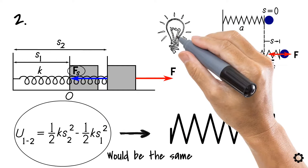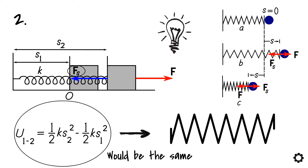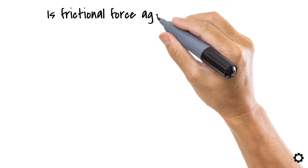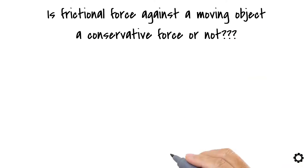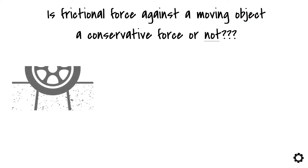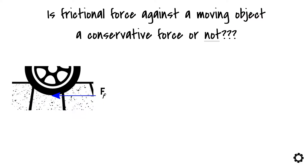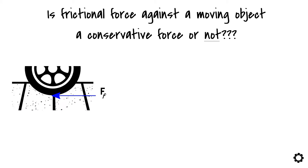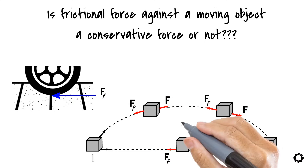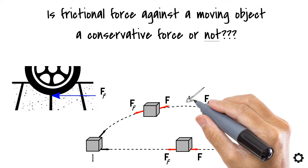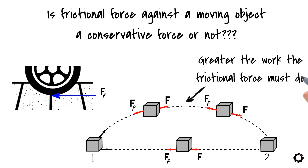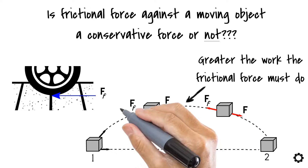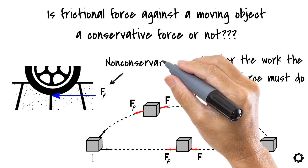You may now already see some patterns here. Think about the following question: is frictional force against a moving object a conservative force or not? No, it is not, because the work that the frictional force does to stop the object from moving is clearly dependent on the path. The longer the path the object moves, the greater the work the frictional force must do. Thus, it is non-conservative.